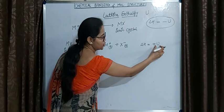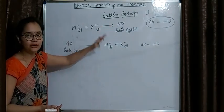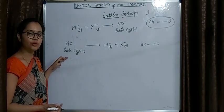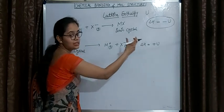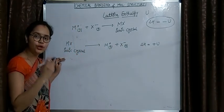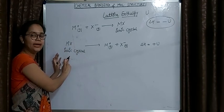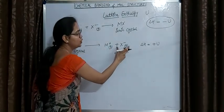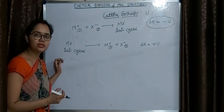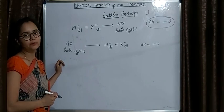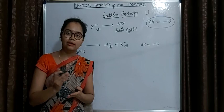So delta H equals plus U for this procedure. Lattice enthalpy can also be defined as the energy absorbed during the breakdown of one mole of ionic crystal into its constituent ions in gaseous state. This is the alternative definition of lattice enthalpy.